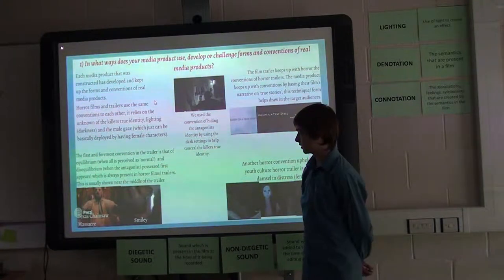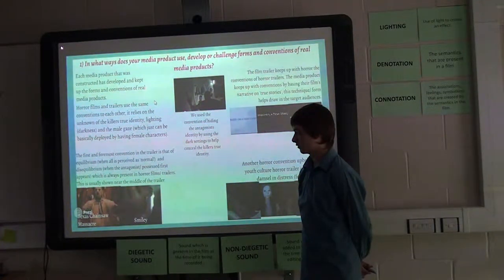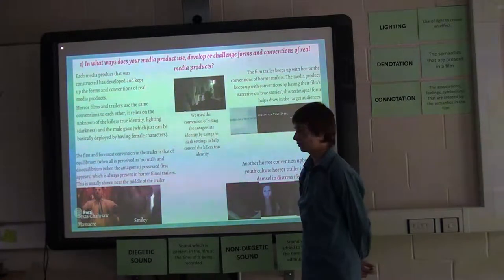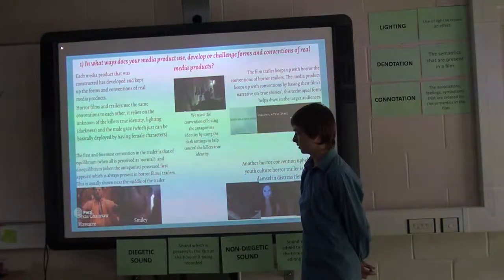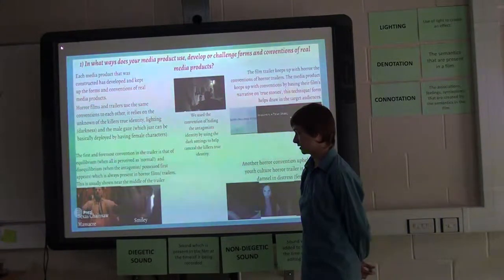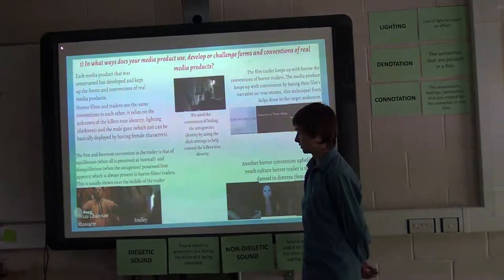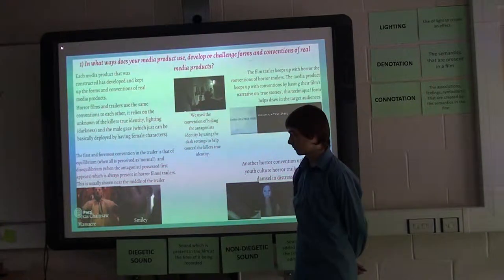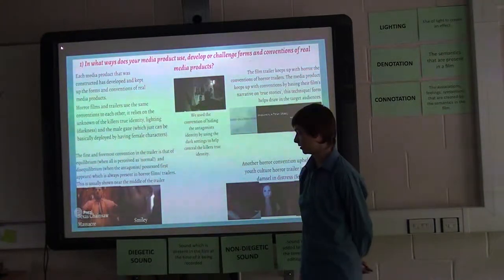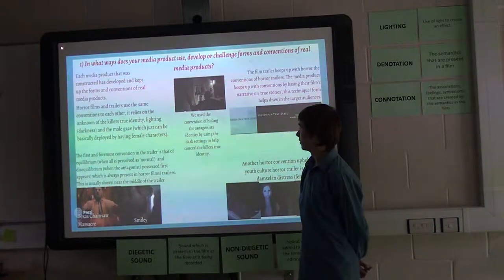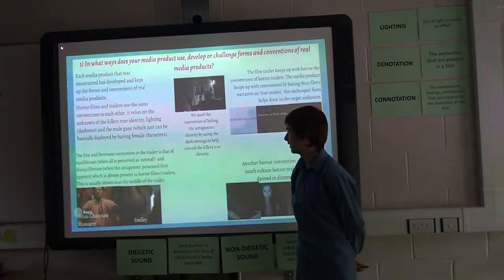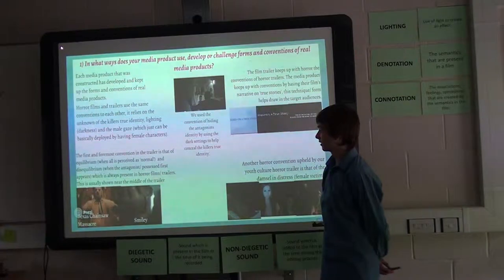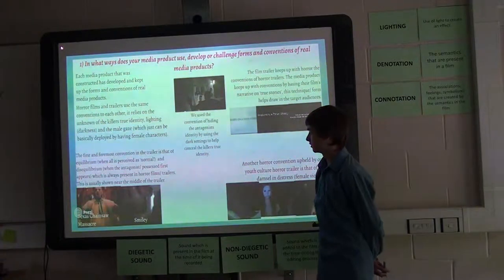The first and foremost convention in the trailer is that of the equilibrium, which is when all is perceived as normal, and the disequilibrium, when the antagonist first appears, which is present in horror films and trailers. This, however, is usually shown near the middle of the trailer. We use the convention of hiding the antagonist's face by using the dark settings to help conceal these true identities.